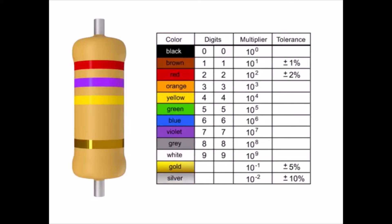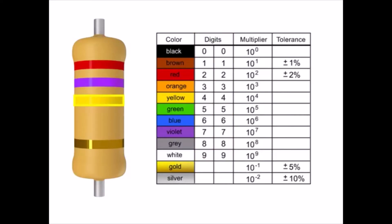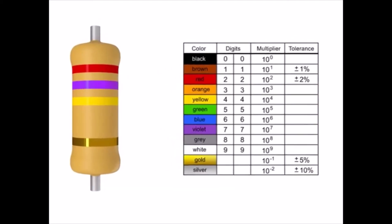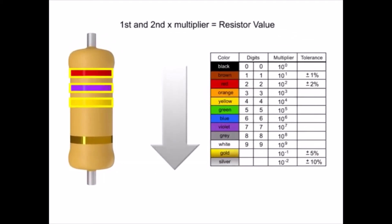In a four-band resistor, the first two bands represent the digits or significant figures. The third band indicates the multiplier, and the fourth band indicates the tolerance. You read resistor bands beginning with the end that has the most bands. A space between the third and fourth bands also indicates the reading direction.